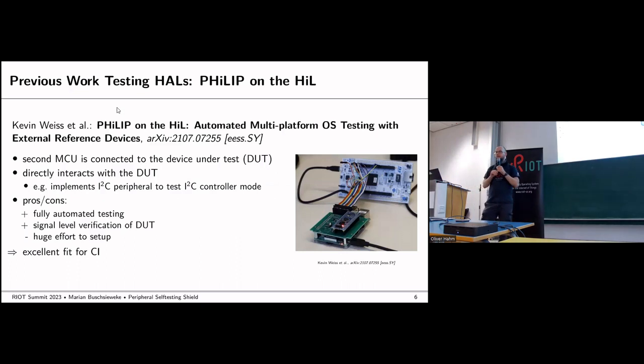We have some previous work on this. We have Philip on the hill, which basically connects a second microcontroller to the first and can verify the output on the signal level. This will catch all the bugs, which is excellent. But the issue is that there is some effort to set this up. We have to configure all the applications with the correct pin mapping. For the CI use case, we have a one-time setup, so this effort pays off. This is a pretty good compromise for CI.